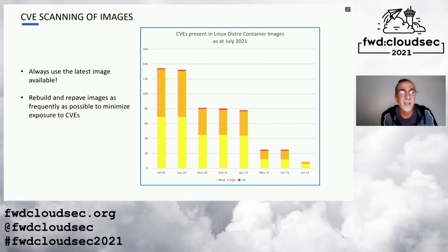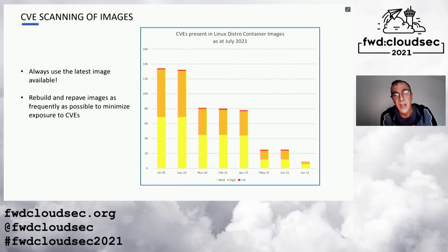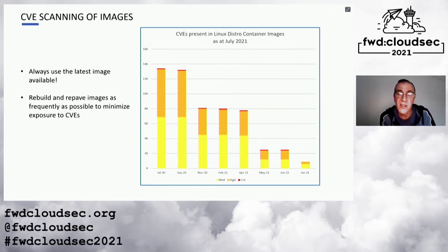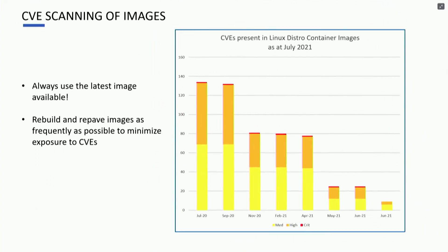One item we need to talk about briefly is CVE or vulnerability scanning. On the right is a plot of a series of scans of images over a period of time of a particular Linux distro, going back from July 2020 through to June 2021. Each bar shows the number of vulnerabilities with criticals in red, highs in orange, and mediums in yellow. The key point to note is how fast these vulnerabilities grow — if you look at June 2021, there are about 10, but you only have to go back a couple of months and this jumps to 80. So it's really important to get to the latest version of the images as fast as possible and repave images layered on top with that latest version.